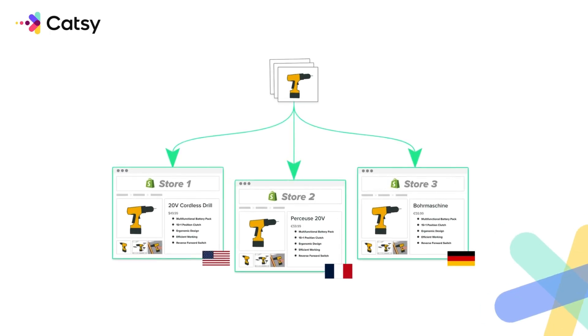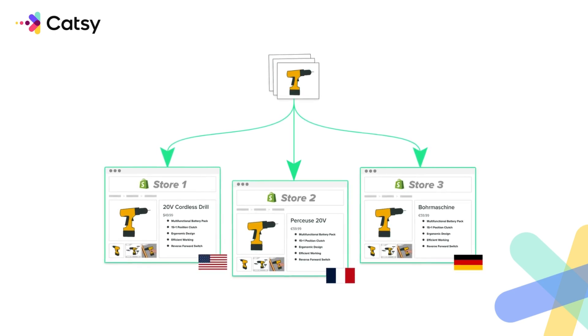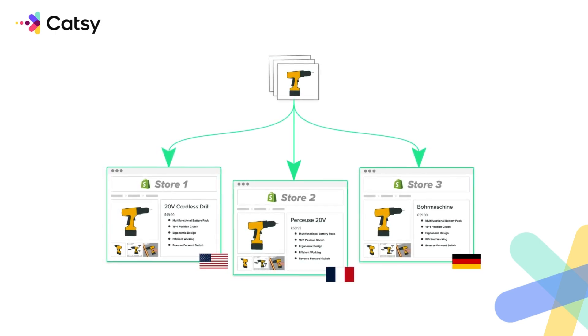By integrating DAM and PIM in the same platform, CATSEA ensures that every product page on Shopify not only has the correct information, but also the right images and media, keeping your brand consistent across all stores. For Shopify specifically, this comes in handy when you sync your product information to your stores, ensuring that assets are connected to the right products and in the right order, and alt text is accurately represented.